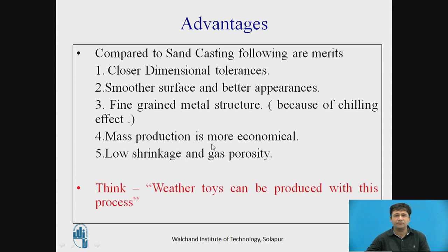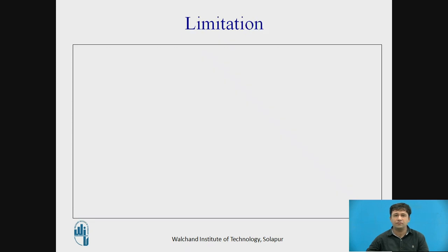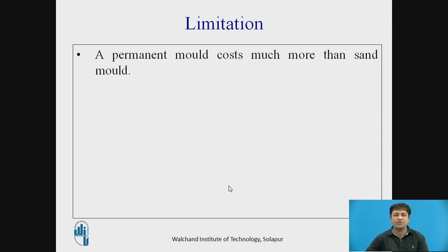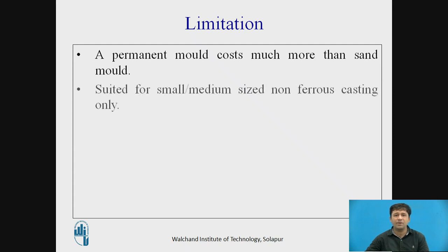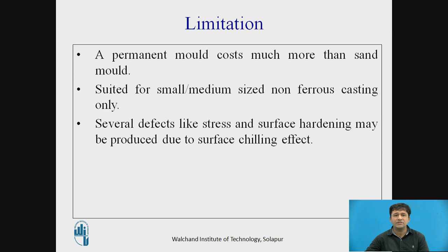Now coming to the limitations. The first and foremost limitation is that the permanent mold cost is more compared to sand mold — as it is metal and some setup is required, the cost is higher. Second, the process is suited for small or medium size non-ferrous castings only. Third, several defects such as stress and surface hardening may be produced due to the surface chilling effect, since the mold itself is made of metal or alloy parts.